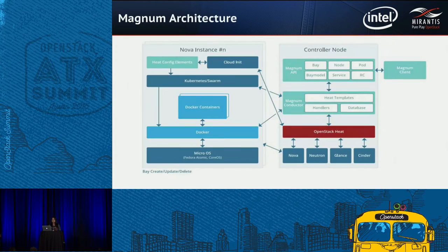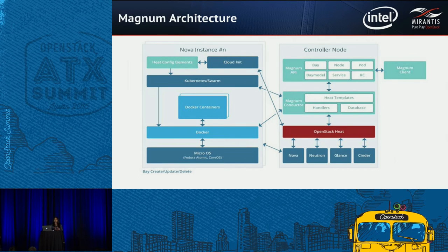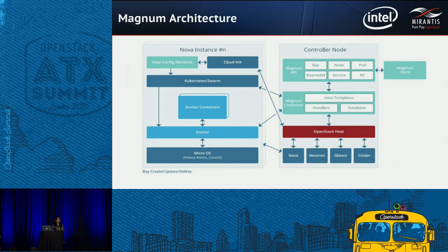This is the architecture of Magnum. We mostly have two resources in Magnum: the Bay model and the Bay. The Bay model is like a Nova flavor — you specify which image to use, which key pairs, the network, and all other parameters. The Bay is a group of Nova VMs where your different COE services are configured and run on top of the Nova VMs, and you can run your containers on it.